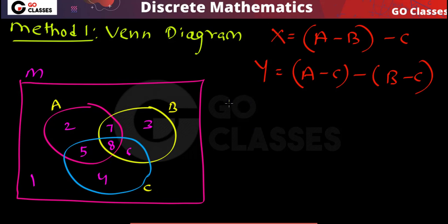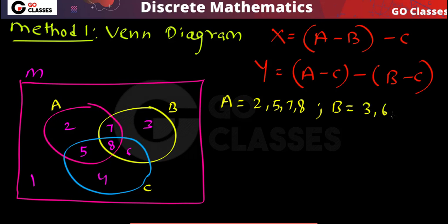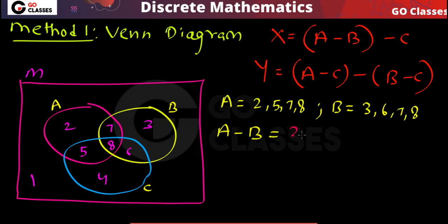The area of A is {2, 5, 7, 8}. The area of B is {3, 6, 7, 8}. For A minus B, we take the area of A and remove the area of B — that gives us the area which is in A but not in B. So A minus B gives areas {2, 5} only.